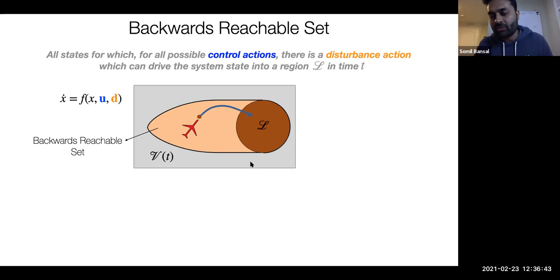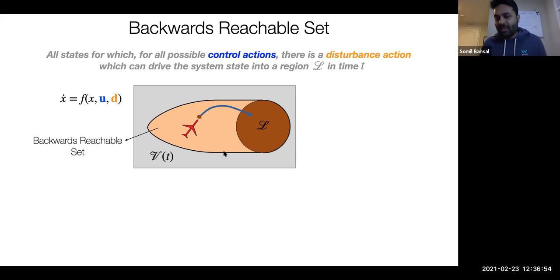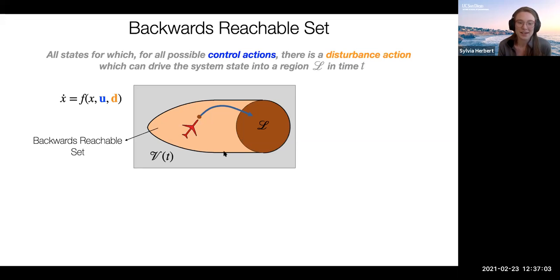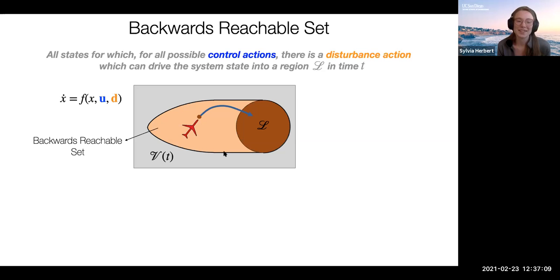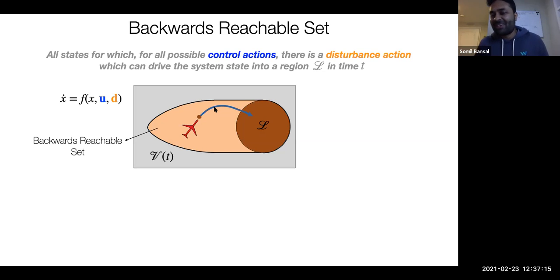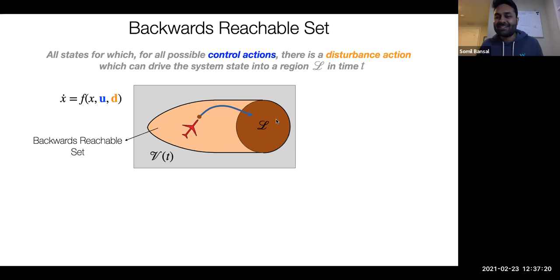There are other notions of the backward reachable set. For example, the target set can be desired goal states, where the backward reachable set represents states from which we can reach those goals. There are also reach-avoid sets, where we want to reach a target set while avoiding some other set of states. Sylvia confirms the class is familiar with these definitions. What I'm showing here is actually a backward reachable tube, not just a set — apologies if I use the terms interchangeably throughout the talk.